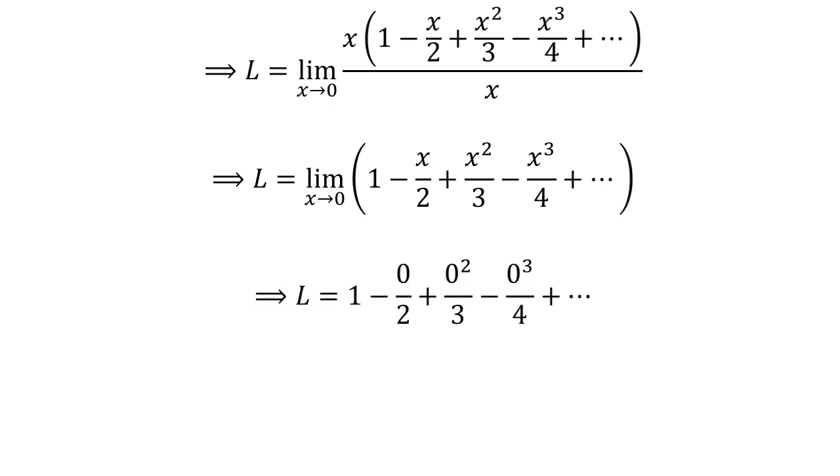As the limit is a polynomial which is continuous at every point of real numbers, let us plug 0 for x. So, the limit L equals 1, that is the limit of natural log of 1 plus x upon x is equal to 1.